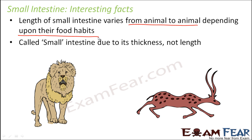Another interesting thing — the small intestine is called 'small' not because it is too long, but because of its thickness. If you look at the thickness of the tube of the small intestine, it is very thin when compared to the large intestine. It is because of its greater thickness that the large intestine is called large, and the small intestine is called small — the name has nothing to do with the length of the intestine. With this, we end our discussion on small intestine and will now talk about the last part of the digestive system, that is the large intestine.